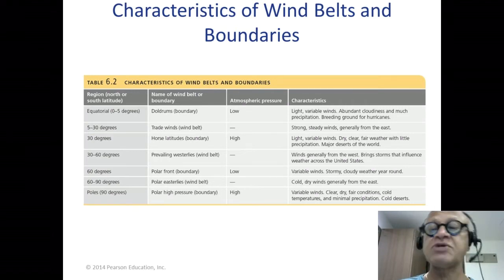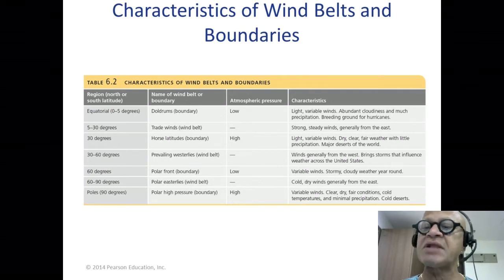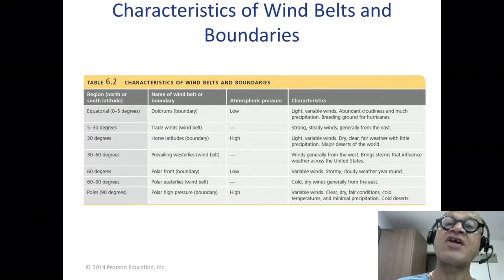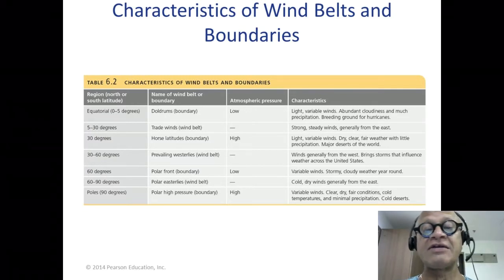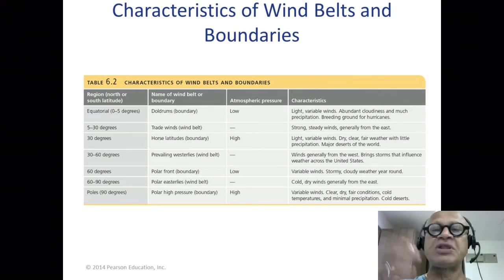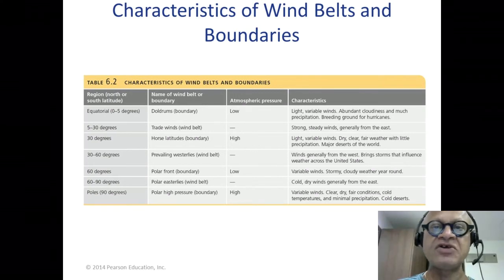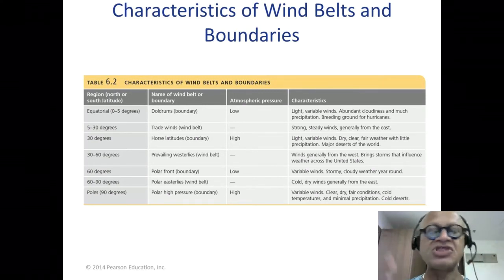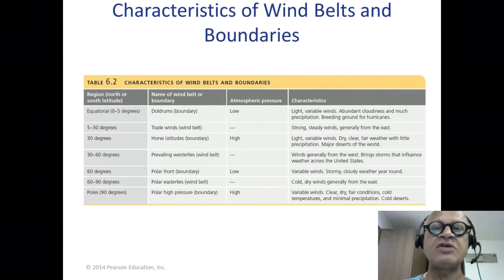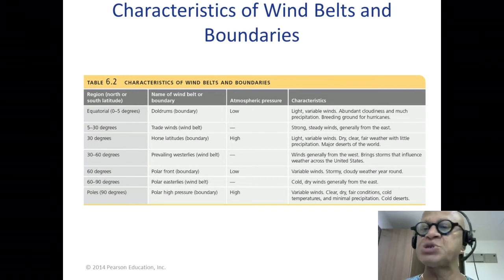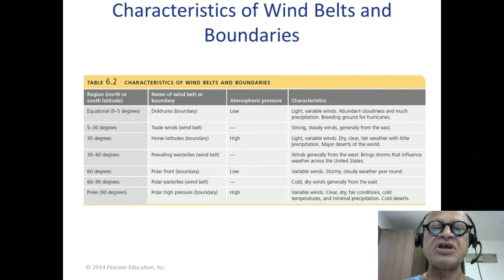Atmospheric pressure is low in the doldrums — that's where temperatures are warm and air is rising — light variable winds, abundant cloudiness, much precipitation, and it's a breeding ground for hurricanes. Wherever you have a lot of convection and warm temperatures, you have these seeds of rotation being put down by the atmosphere, and based on various conditions favorable for cyclones, cyclogenesis happens. That's what is meant by 'breeding ground.'